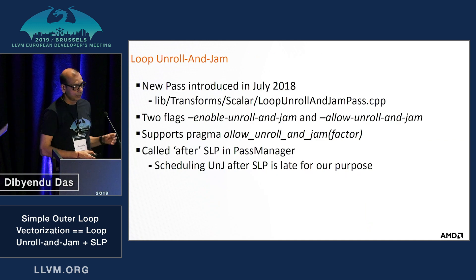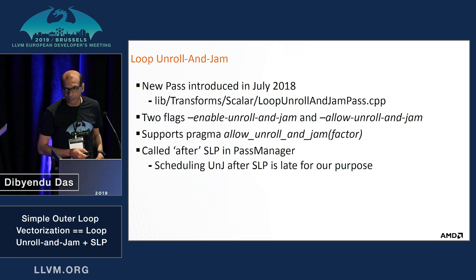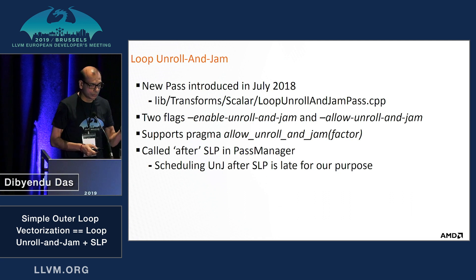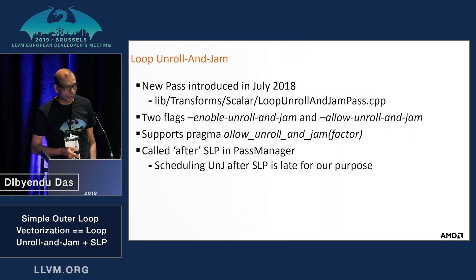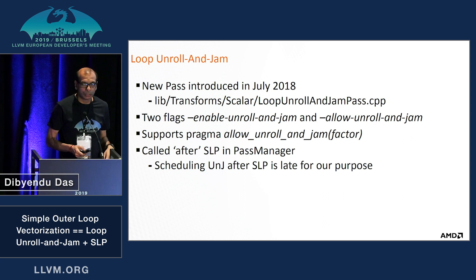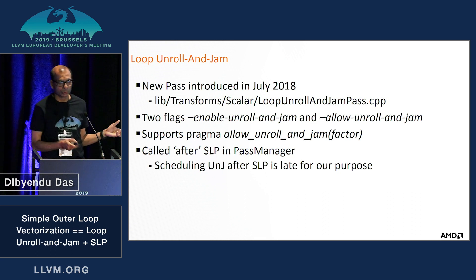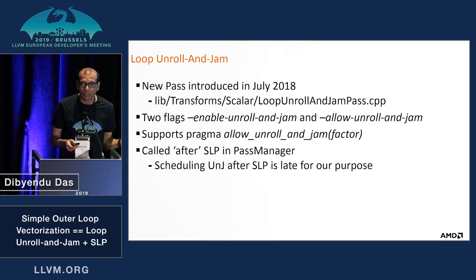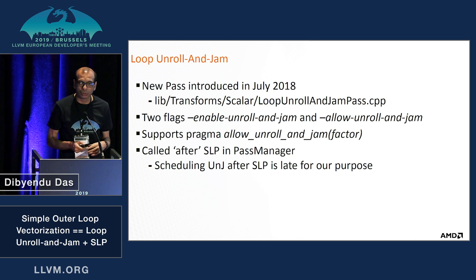Interestingly, a new pass was introduced in July 2018 by David Green of ARM. It's in the transform scalar loop unroll-and-jam pass, and it allows you to do the loop unroll and jamming both by using a pragma or by generally forcing it on your code automatically.